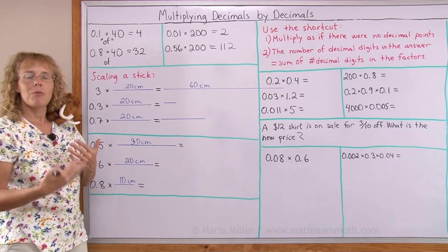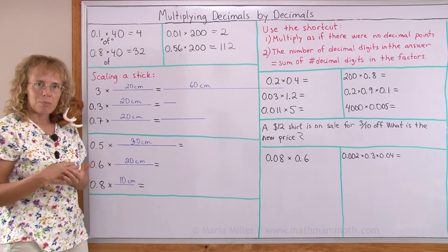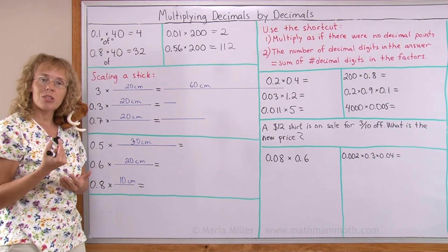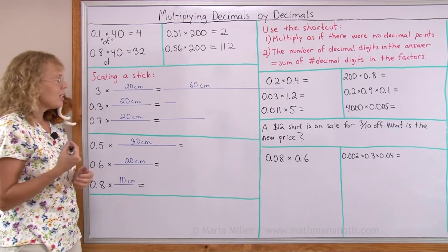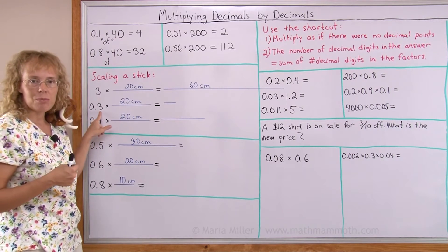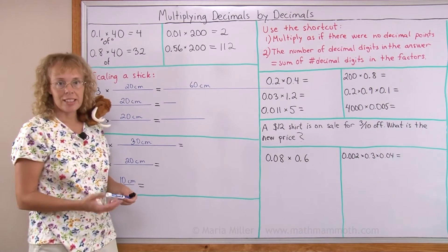And I can think through the 1 tenth. 1 tenth part of 20 centimeters is 2 centimeters, right? So 3 tenths is 3 times as much. 3 times 2. So it is 6 centimeters.